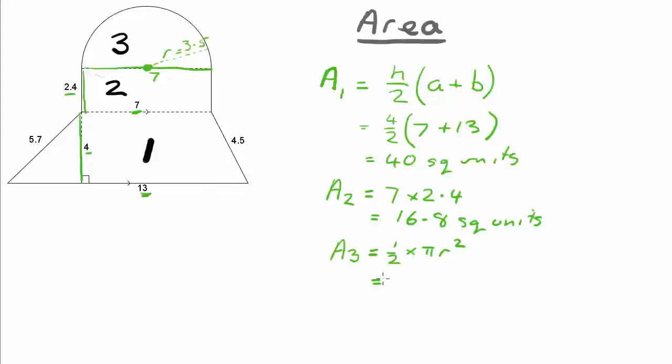So in our formula now what we've got is a half of pi times three point five squared, which when we use our calculator we'll calculate that to nineteen point two four two two five five square units. So rounding that off we've got nineteen point two square units.